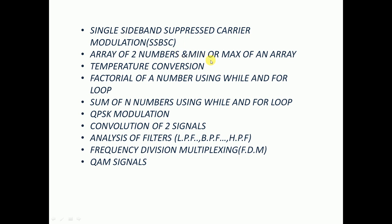Next we are going to discuss arrays — finding the minimum or maximum of numbers given in an array using the max-min array block. Then we will discuss temperature conversion from Celsius to Fahrenheit or vice versa using a simple mathematical equation. After that, we will find the factorial of a number using both while loop and for loop, and also find the sum of N numbers using both loops.